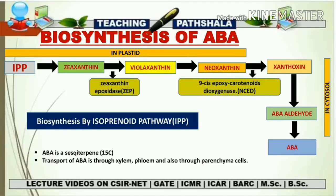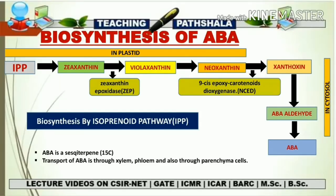Violaxanthin is converted into neoxanthin, which is also a 40-carbon compound. Till the formation of neoxanthin, all previous compounds are formed in the plastid — so from IPP to neoxanthin, all this pathway takes place in the plastid. After the formation of neoxanthin, the product enters into the cytosol, and from this point all products and reactions take place in the cytosol.